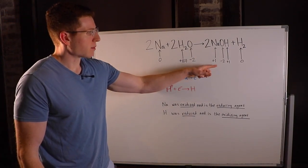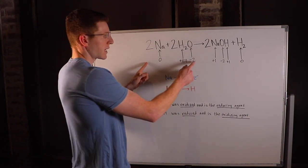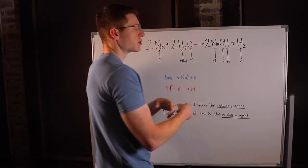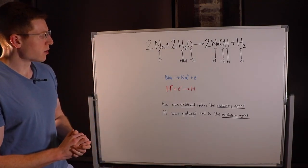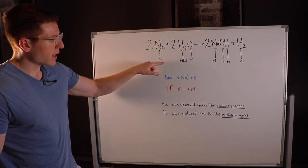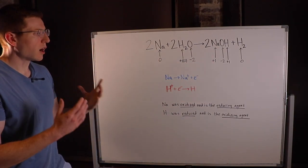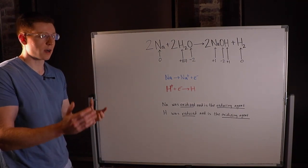Once you have all of your oxidation numbers assigned to your atoms, what you do is you compare them from the reactant side to the product side, and you see what changed. So sodium, for example, it started out neutral with an oxidation number of zero, and then it went up to +1 over here. That means it lost an electron because its charge went up.